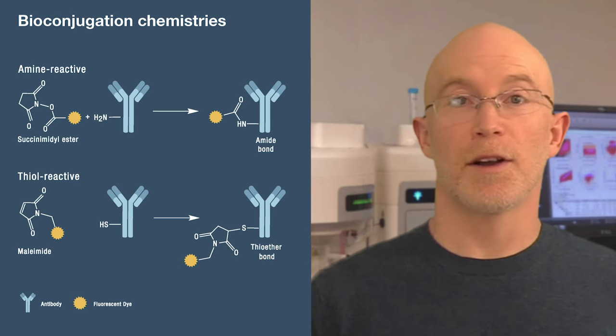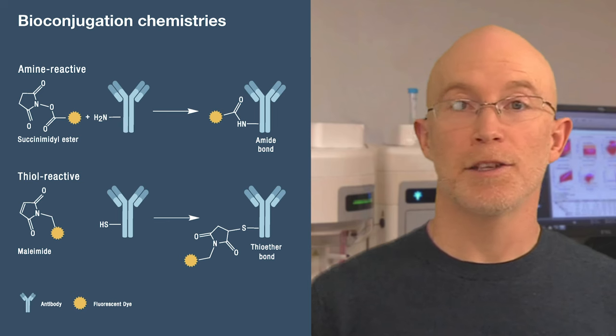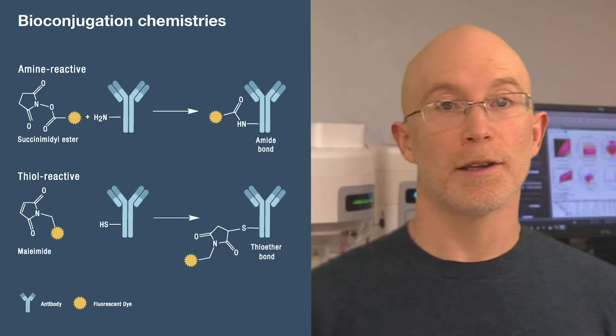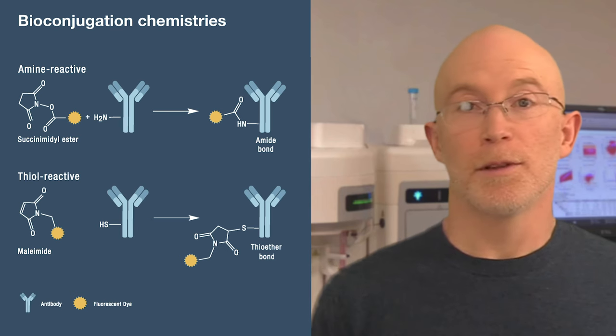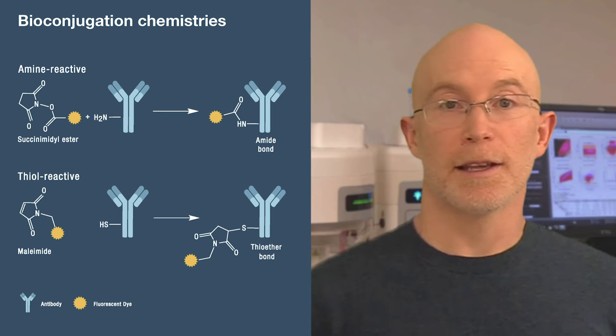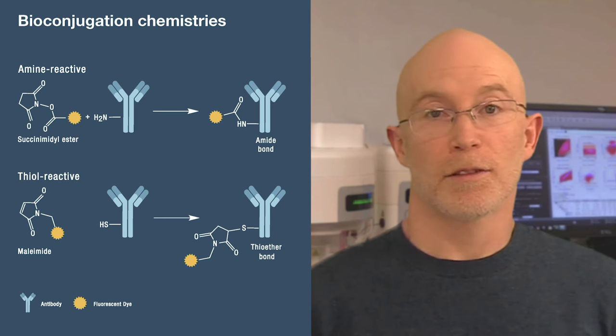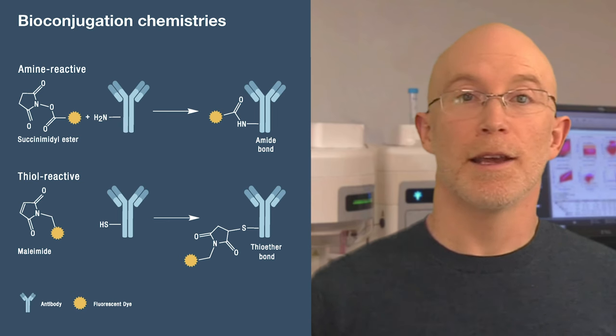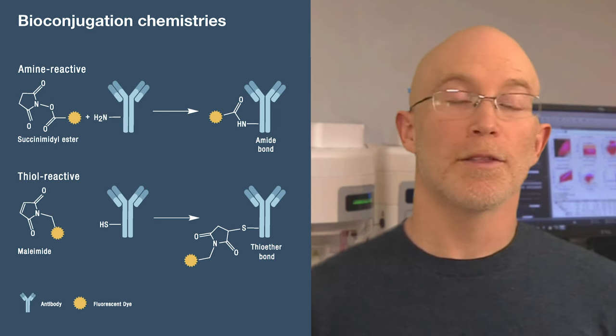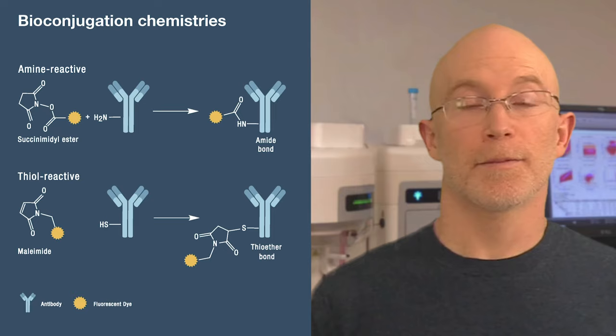The conjugation reaction involves direct covalent modification of the amino acid side chains in the antibody. Various coupling chemistries are available that form a stable covalent bond between the antibody and the desired label — in this case, a fluorescent dye. Two of the most commonly used chemistries, succinimidyl ester and maleimide, will target amino and thiol groups respectively. Unfortunately, conjugation also has the potential to alter the antibody structure or disrupt its function, meaning the antibody-antigen interactions could be affected.